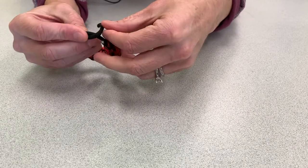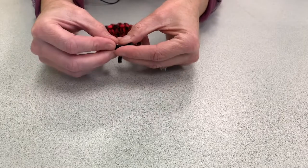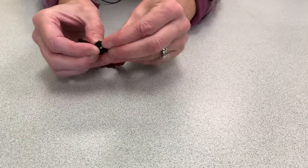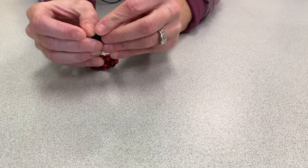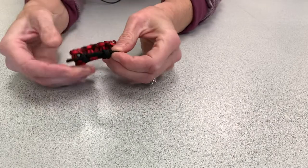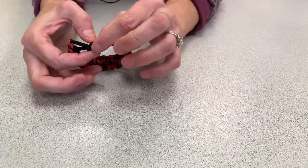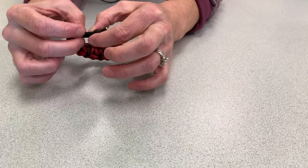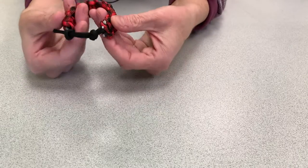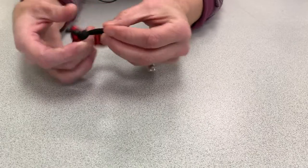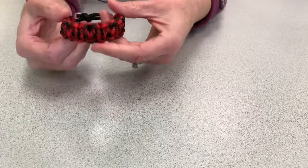And then we'll do the same thing on the other side. We're just going to go all the way around. Pop that through. And now you have two sliding knots. And that is your finished product.